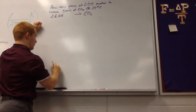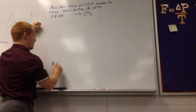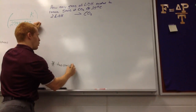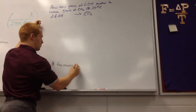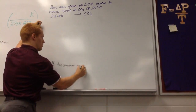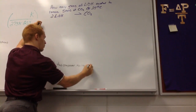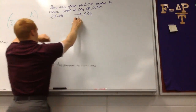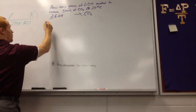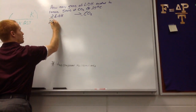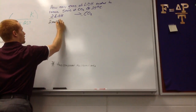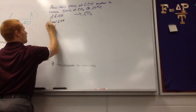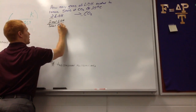Since it's talking about two different compounds, you need to have a mole-to-mole ratio. Remember, the mole-to-mole ratio comes from the coefficients — the numbers in front. Since there's no number in front of CO₂, that's a one. So for every two moles of lithium hydroxide, there is one mole of carbon dioxide.